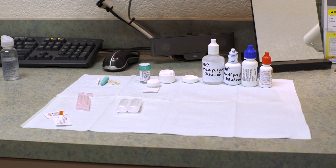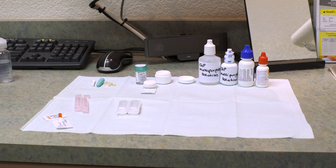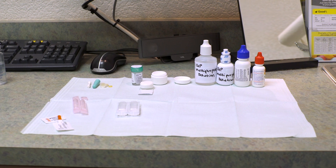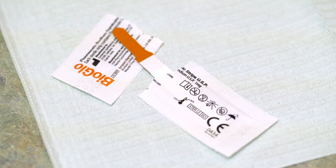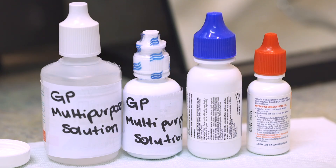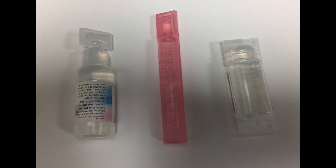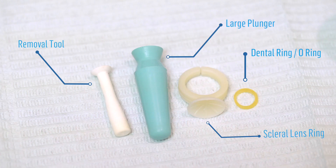Setting up your exam room before a scleral lens fitting can save you time. Supplies necessary include fluorescein strips, gas permeable contact lens cleaner, conditioning solution, multi-purpose solution, non-preserved saline, diagnostic scleral lenses, application devices, and removal tools.